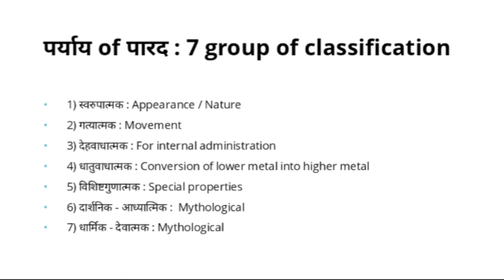Deha Vadatmaka — based on disease-curing capacity and internal administration — it has synonyms like Amrita, Chaiva, Paramamrita, Paratha, Mrityunashah, and Rasayana. It acts as Amrita — like Ambrosia — and promotes good health, thereby delaying the death of a person. Mrityunashah — it does the Nasha of death. Paramamrita — it is the supreme Amrita. Paratha — it saves the person's life from the sea of disease. Rasayana — it produces high capacity in the body to fight against diseases and is a high immune booster.